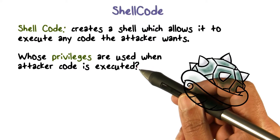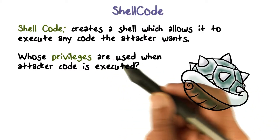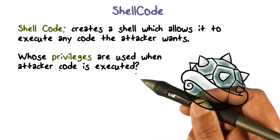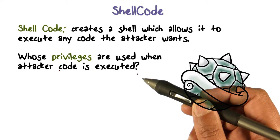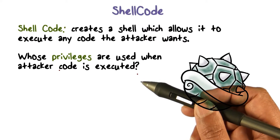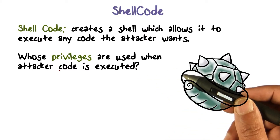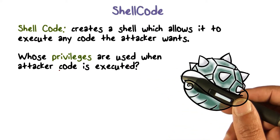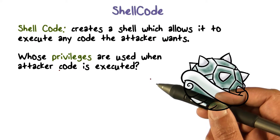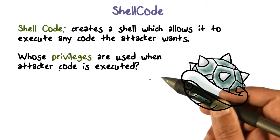Let's ask ourselves: when control transfers to the shellcode, what privileges are going to be used when this code is executed? We know the code is attacker code — the attacker created it, placed it in memory, and transferred control of the program to the shellcode. Remember, the program was running on behalf of some user. If it's a service, it may be running as root, or some role, or it could be a system process. So the program was running with certain privileges.